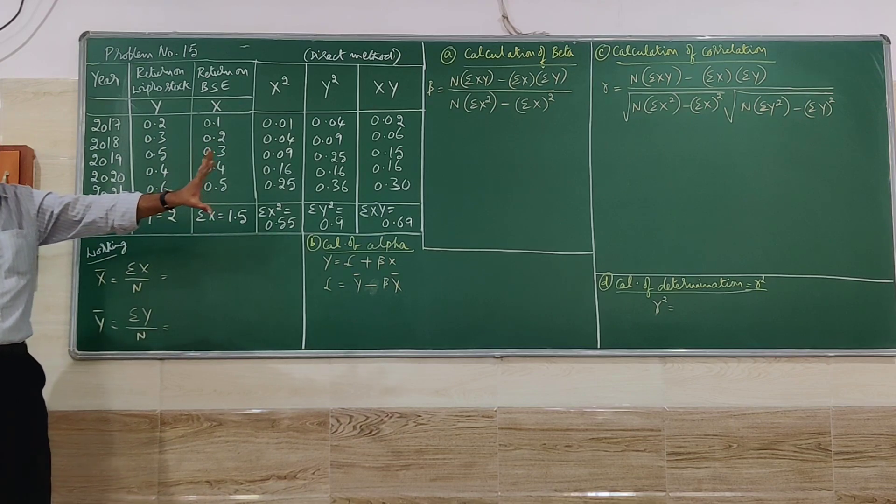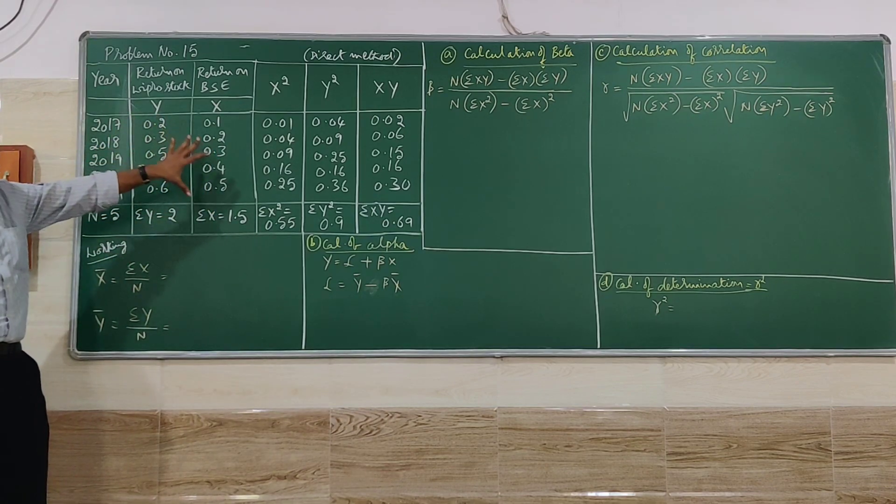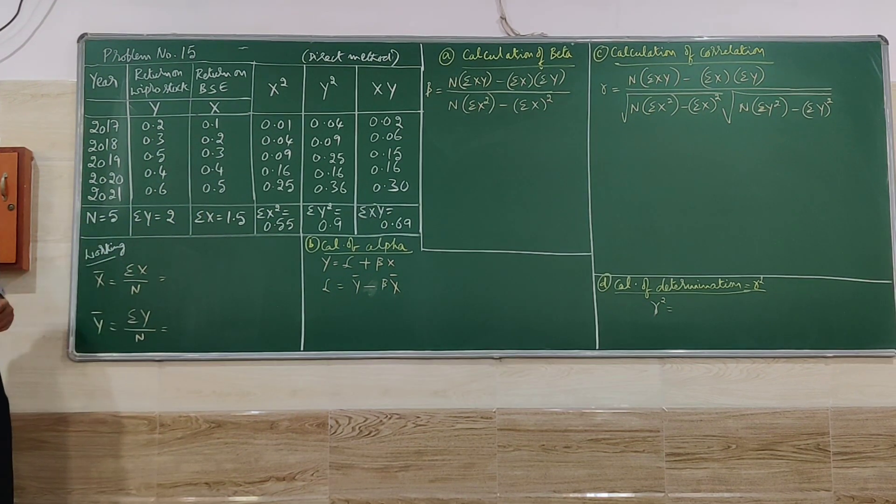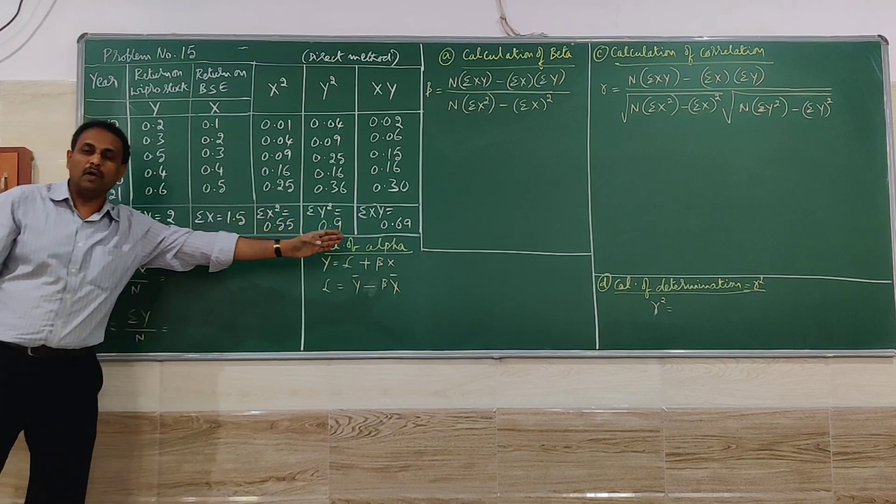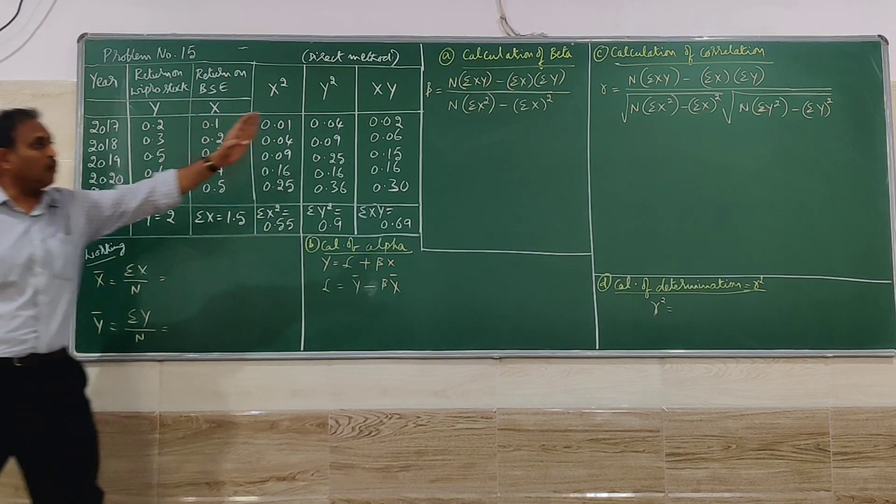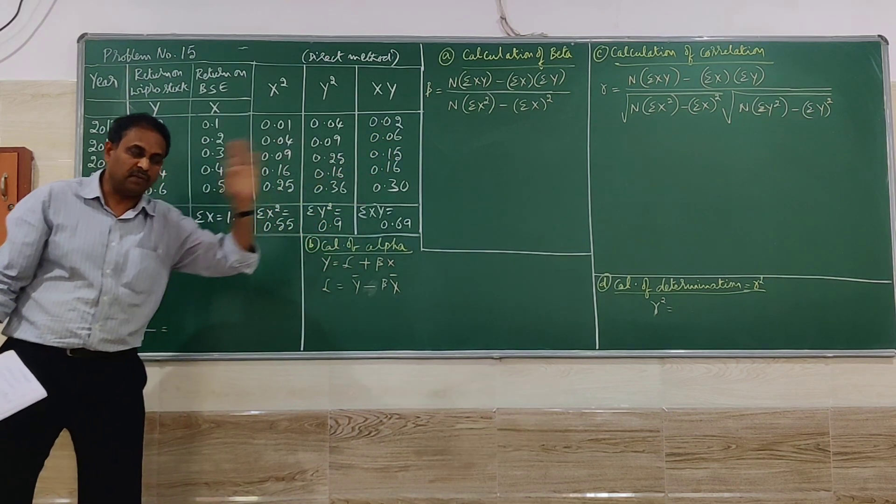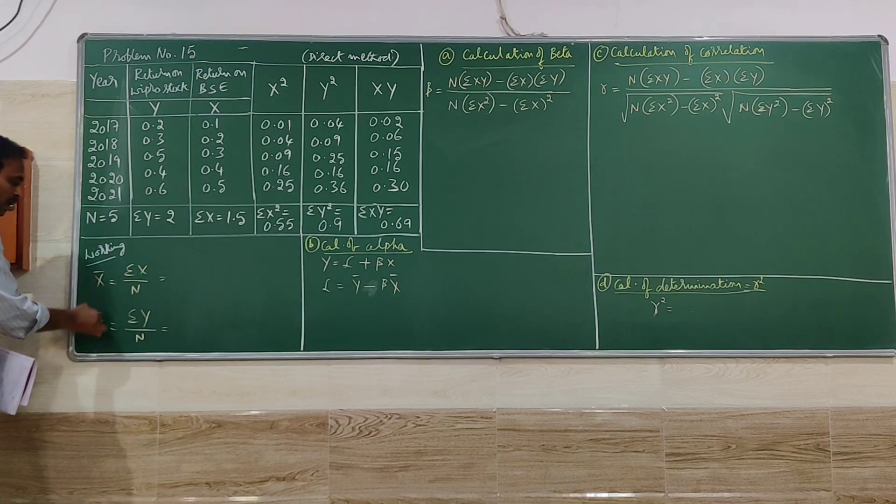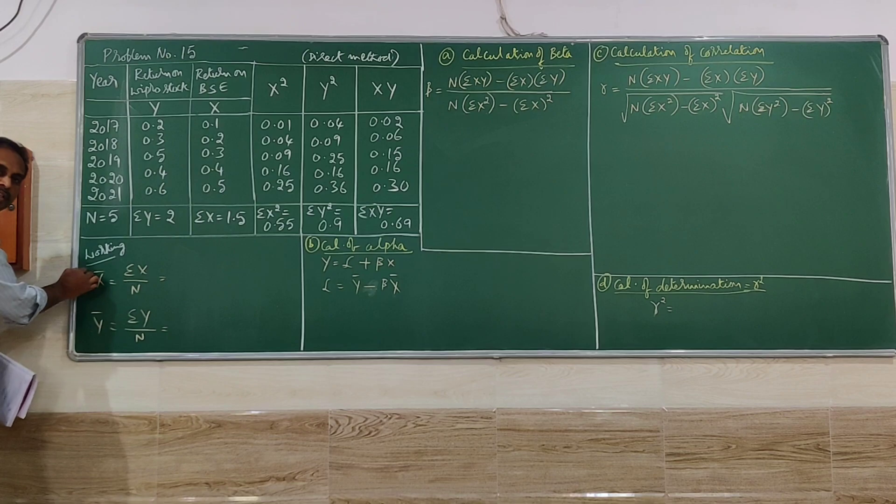If any one number is gone wrong, the entire answers will go wrong. So you have to be very careful. After totaling all the columns, now we have to go for first working. Before we go for calculation of beta, alpha, whichever is the one, let us always start with working. Working is X bar and Y bar. That is average of X series and Y series.